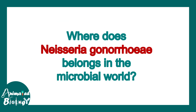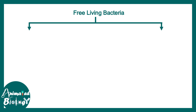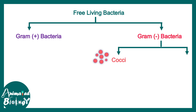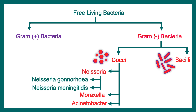In the microbial world, if we classify free-living bacteria using gram-staining classification, Neisseria gonorrhea are gram-negative cocci. Under that, we can find two important species of Neisseria: Neisseria gonorrhea and Neisseria meningitidis. The first is responsible for the sexually transmitted disease gonorrhea, and the second is important for meningitis infection.